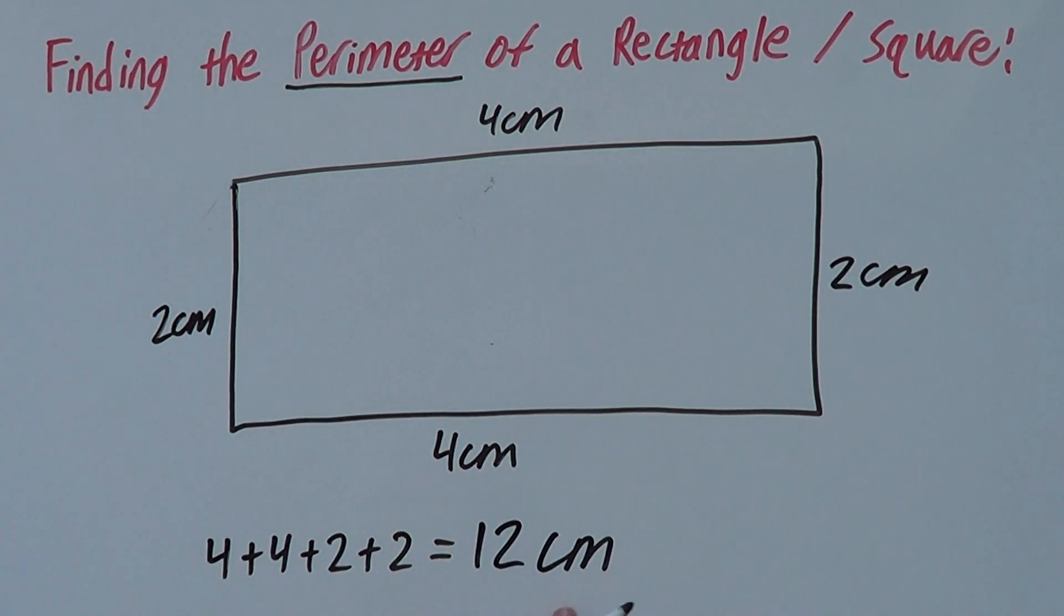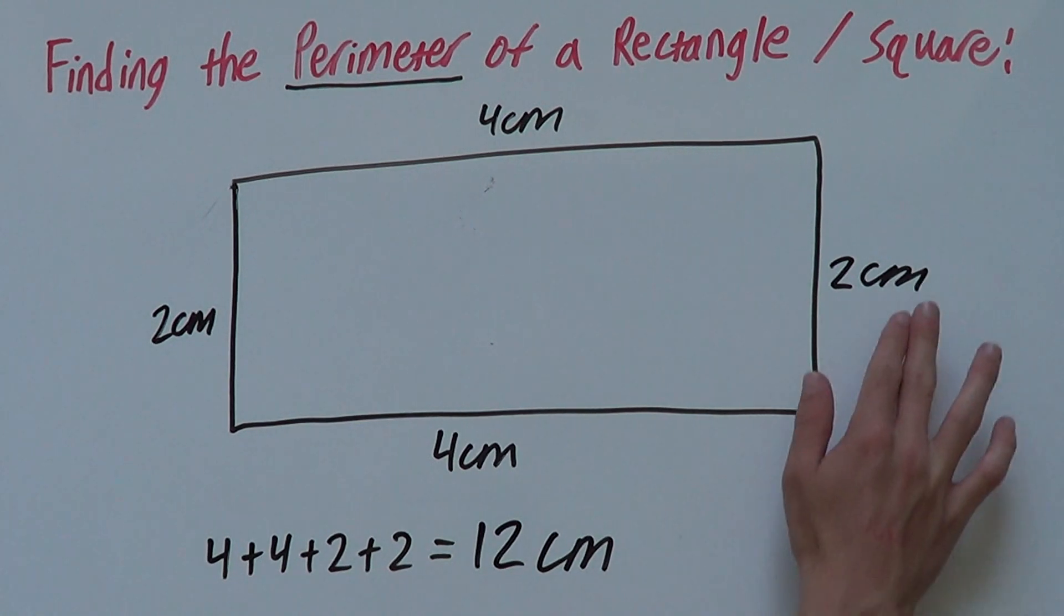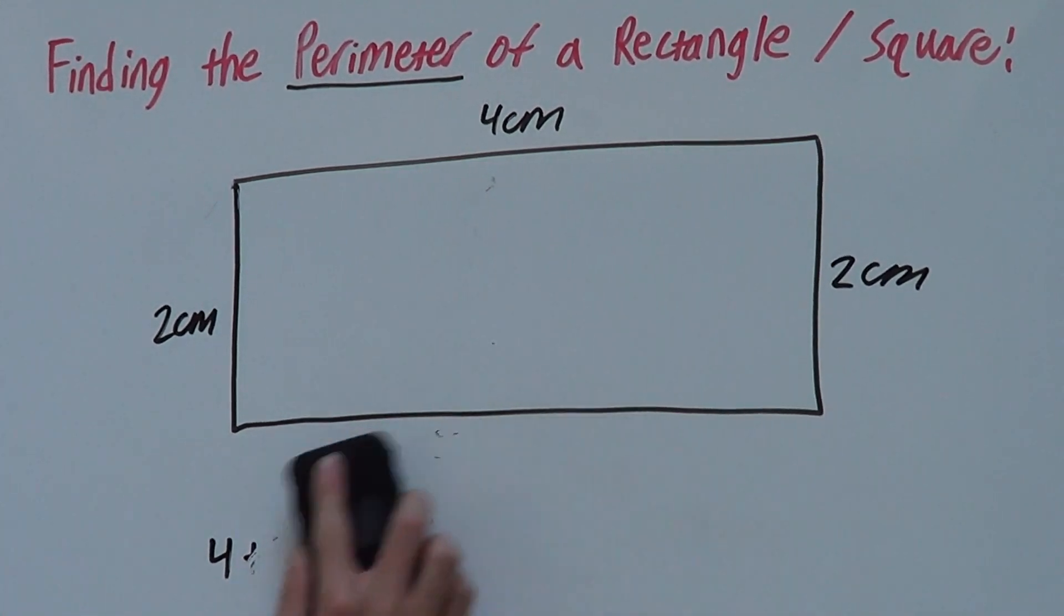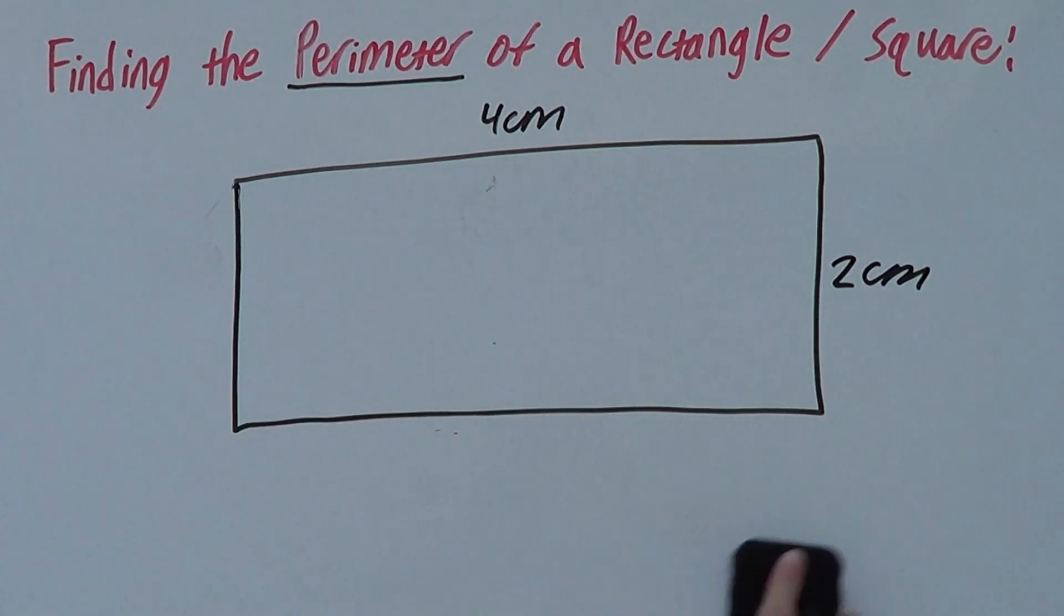And we write centimeters behind this because we're working with centimeters. So the perimeter of this rectangle would be 12 centimeters. So the length all the way around is 12 centimeters.